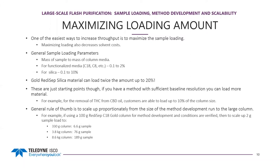The general rule of thumb is that we can scale up proportionately from the method development run to the large column. For example, if I'm using a 100-gram Redicep C18 Gold column for method development and have verified baseline resolution, loading 2 grams of sample — I could scale that up to 6.6 grams on a 330-gram column, 76 grams on a 3.8-kilogram column, or up to 189 grams on the 8.6-kilogram column at 2% loading. We have customers using the 8.6-kilogram column loading up to 10% — that's 860 grams per run — and getting sufficient results.